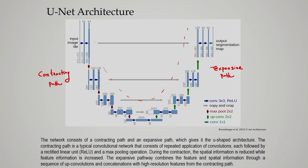The contracting part is a typical convolutional network — we apply the convolutional operation and the pooling operation repeatedly, with the ReLU activation function. Repeated application of convolution followed by ReLU and max pooling constitutes the contracting part. During the contraction, the spatial information is reduced while feature information is increased. The expansive part combines the feature and spatial information through a sequence of up-convolutions and concatenations with high-resolution features from the contracting part.